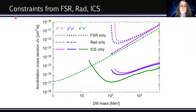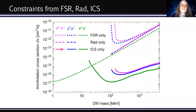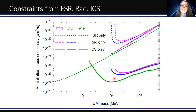Here I show the constraints on the velocity-averaged annihilation cross-section as a function of dark matter mass for the three channels: green for electron, blue for muon, pink for pion. The three line styles correspond to constraints obtained by considering separately the inverse Compton signal (solid), radiative decay (dashed), and final state radiation (dotted). When present, inverse Compton scattering typically provides the best constraints, since for large dark matter masses it is the dominant flux contribution. For low dark matter masses below 20–30 MeV, final state radiation better constrains the cross-section, but this affects only the electron channel since it is the only one kinematically open at those masses.